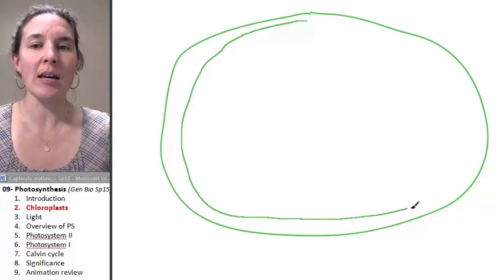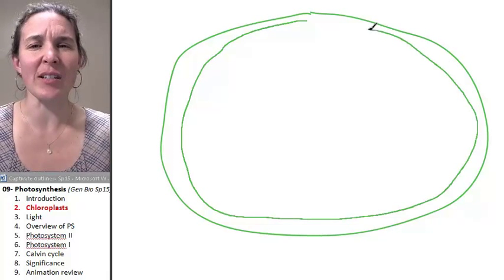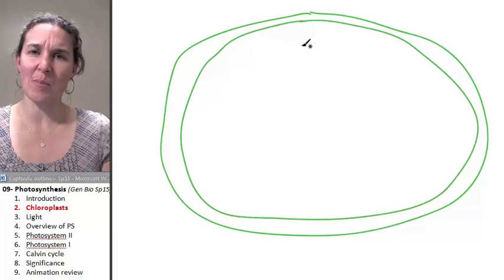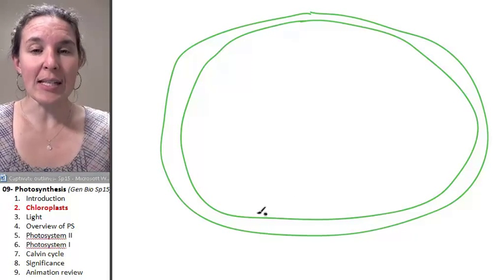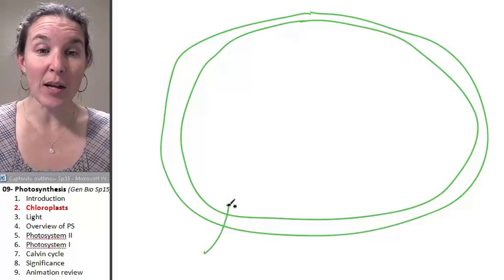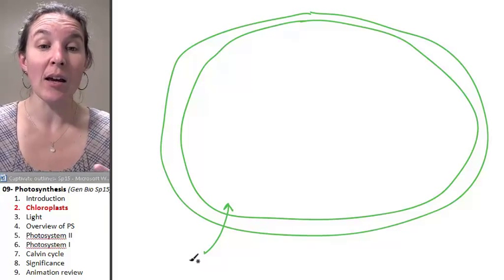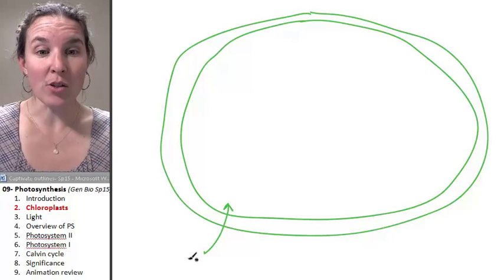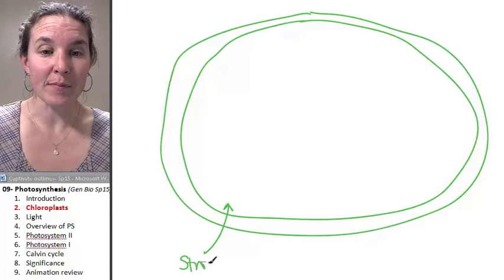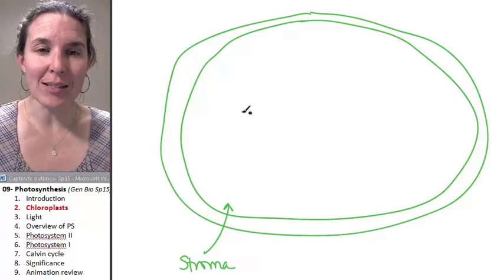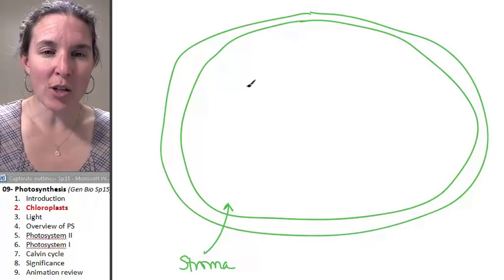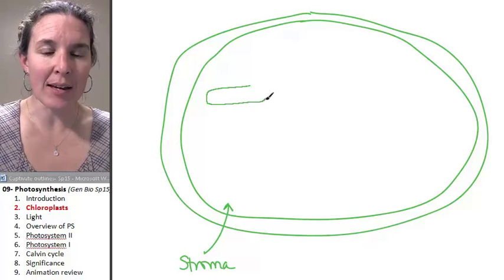It totally looks different than the mitochondria. Already it looks very different. It does have its own cytoplasm. The cytoplasm in a chloroplast is called stroma. It also has those little stacks of pancakes. And so I'm going to draw them like this.